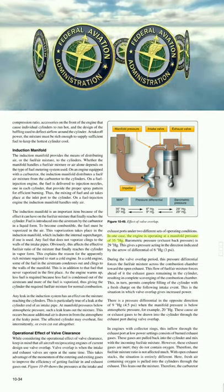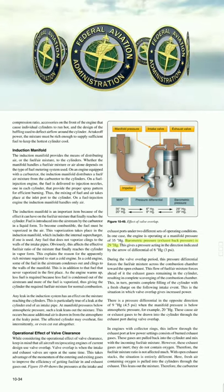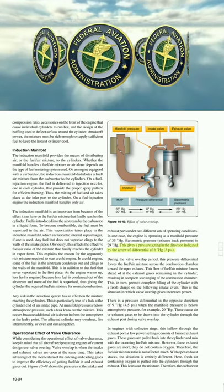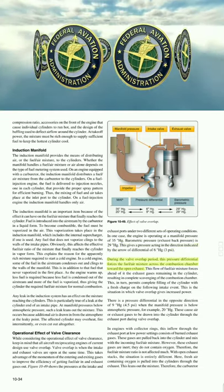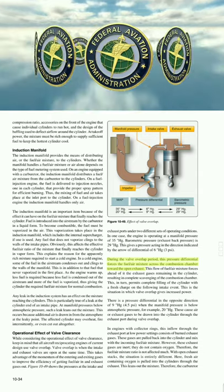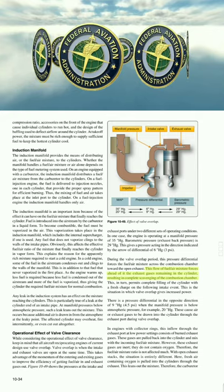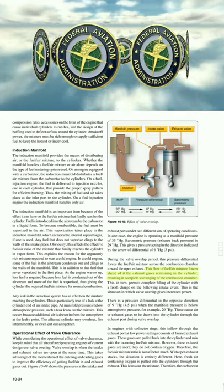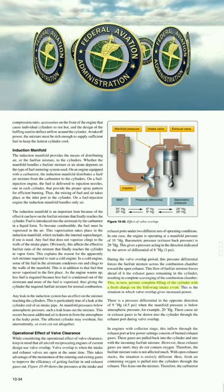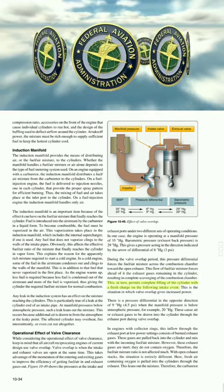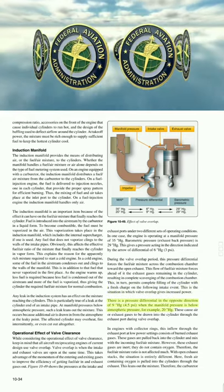Figure 1049 illustrates two operating conditions. In one case, the engine operates at a manifold pressure of 35 in. Hg with barometric pressure at 29 in. Hg and exhaust back pressure at 29 in. Hg, giving a pressure differential of 6 in. Hg (3 psi). During valve overlap, this differential forces the fuel/air mixture across the combustion chamber toward the open exhaust, scavenging exhaust gases and permitting complete filling of the cylinder with a fresh charge — this is how valve overlap gives increased power.